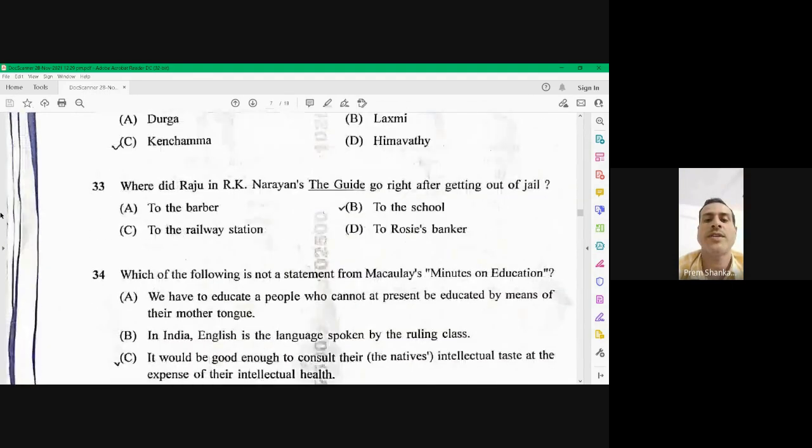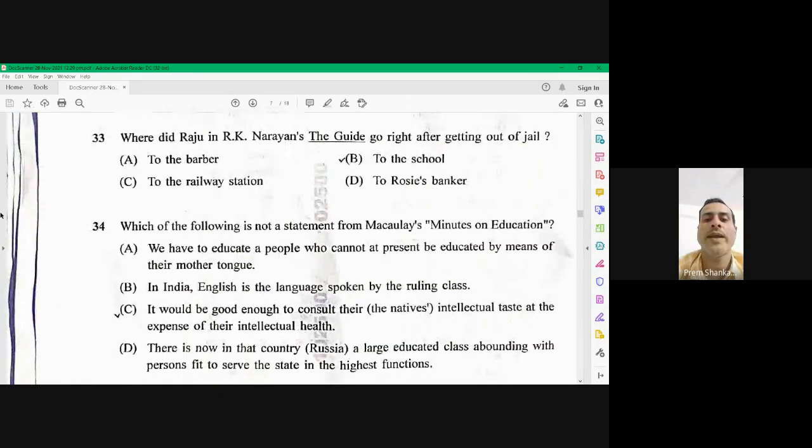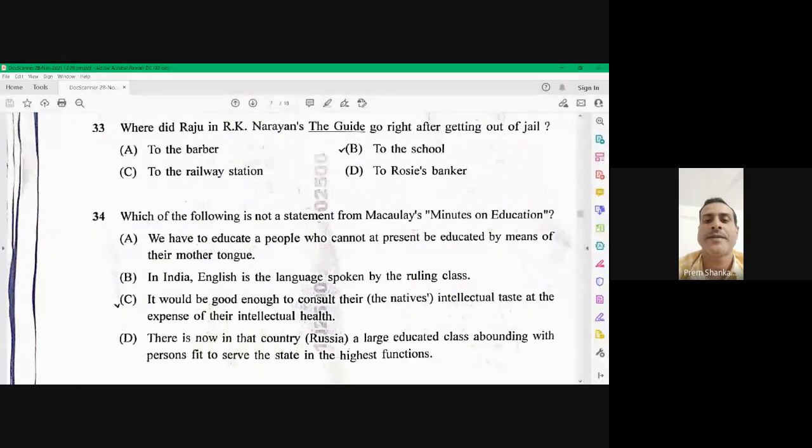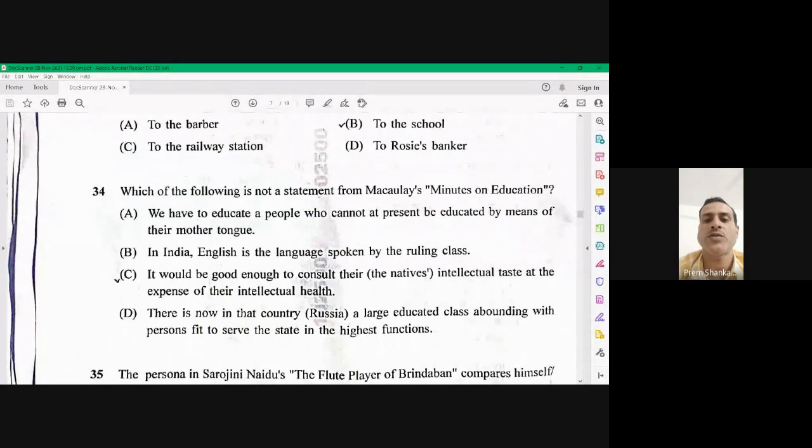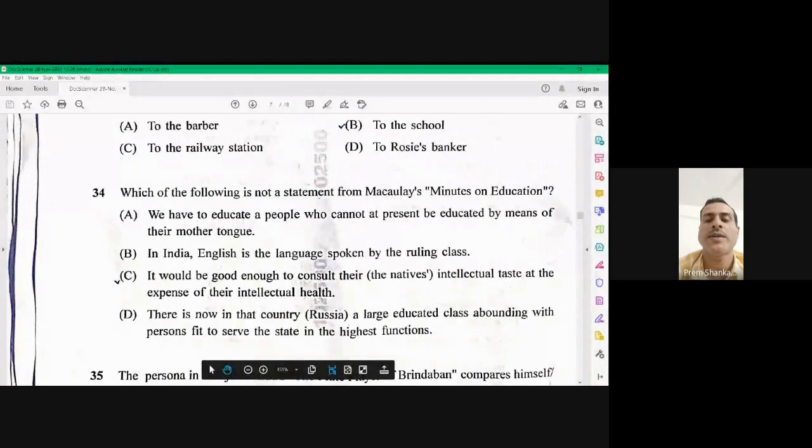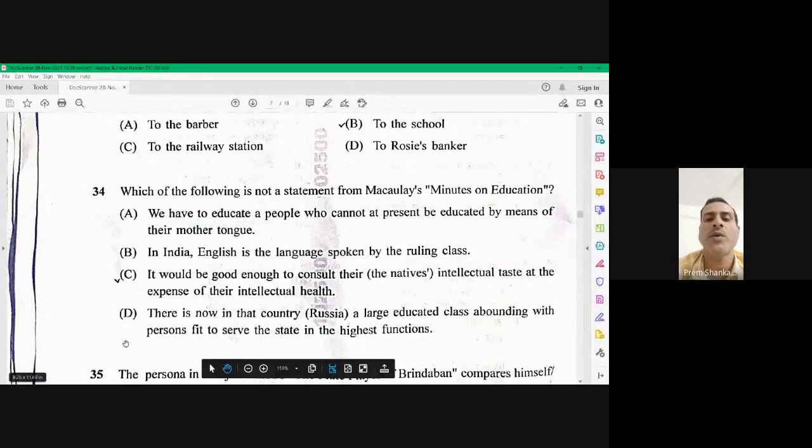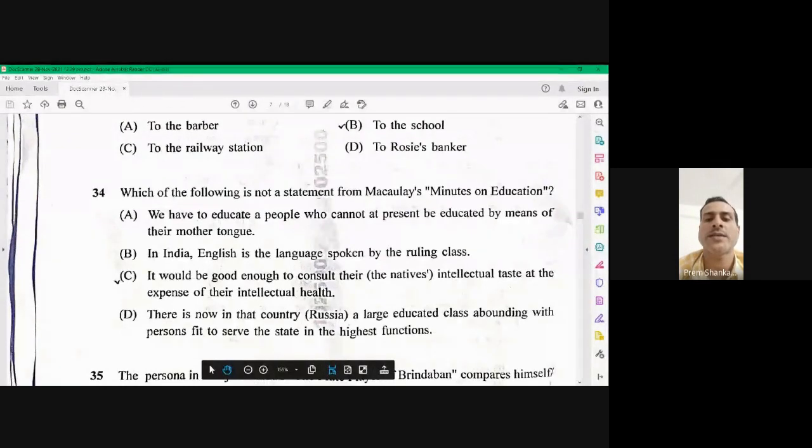Moving on to question number 33, where did Raju in Arcane Arians, the guide go right after getting out the jail? So the right answer here is to the barber. As you know that Raju was in prison for two days and after he came out, his beard appeared on his cheek. So when he came out, the barber said that you are looking like Maharaja. So that is the right option.